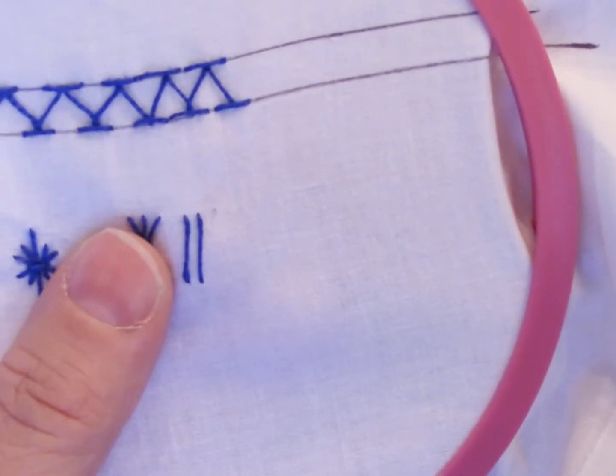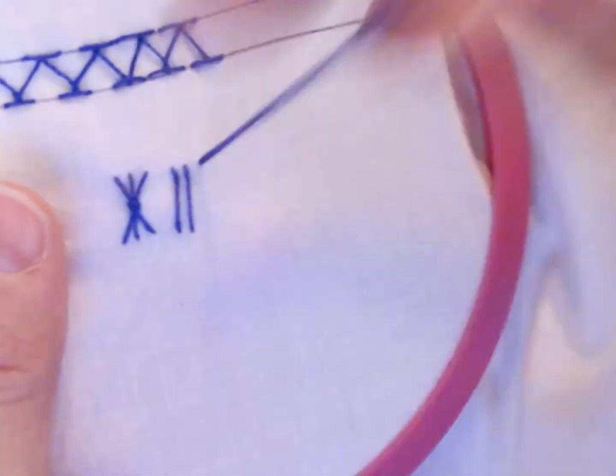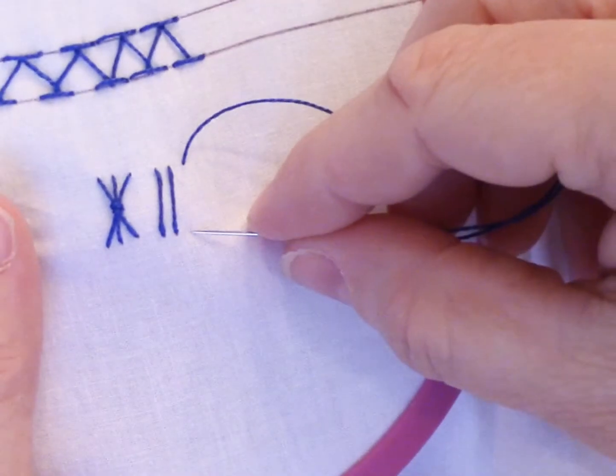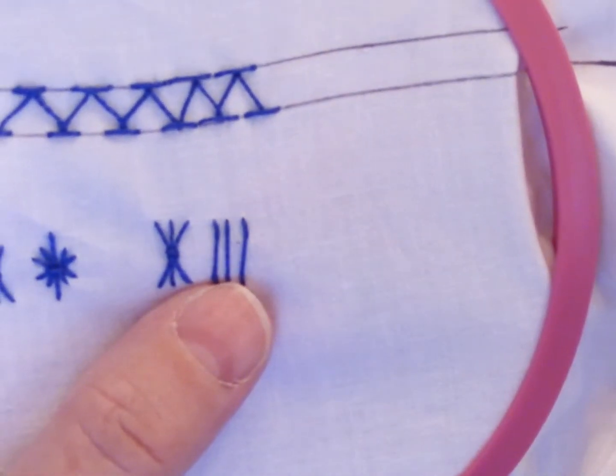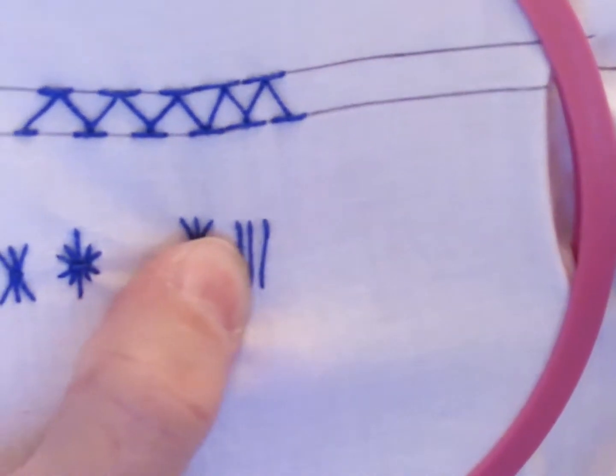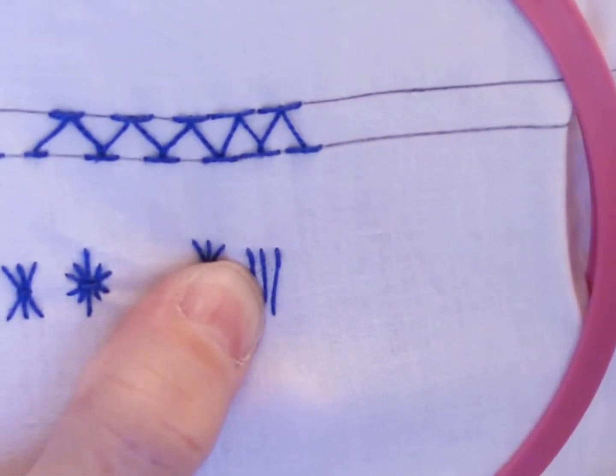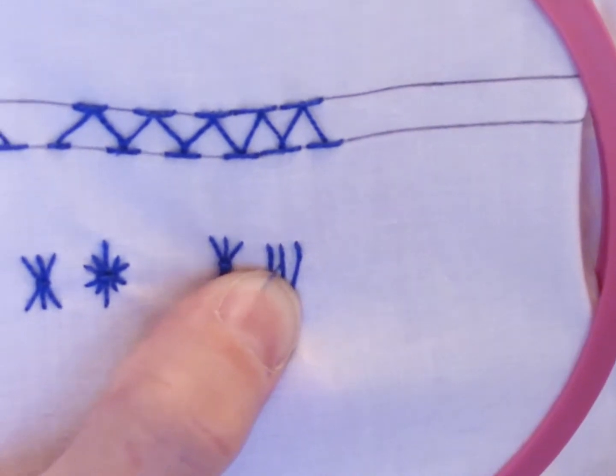So this time I'm going to move my catch stitch up toward the top. I'm coming out under the middle stitch, under outside stitch, under the other outside stitch.